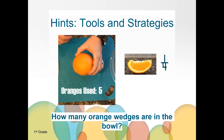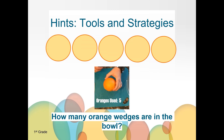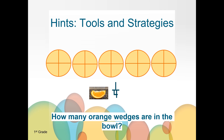Let's look at some strategies that you could use. You could use a picture to help you. Based on what we know, how many whole oranges do we have? Five whole oranges were used to cut the orange wedges. How many pieces is each orange cut into, or what size fraction is a whole orange cut into? Each whole orange is cut into fourths, so there are four pieces or four fourths in each orange. How many fourths are in the bowl?